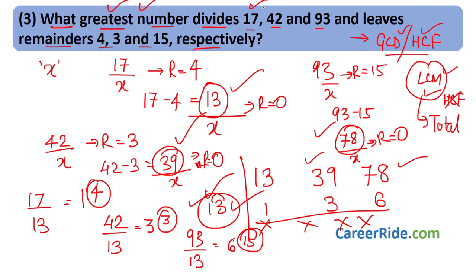Question 14: Manoj wants to paste wallpaper on a wall that is 4 m 50 cm in length and 3 m 50 cm in height, covered completely only by square pieces of wallpaper of the same size. What is the number of maximum-sized wallpaper squares needed to cover the wall completely? 'Maximum sized' means greatest — so we have to find HCF, specifically of the two dimensions of the wall.